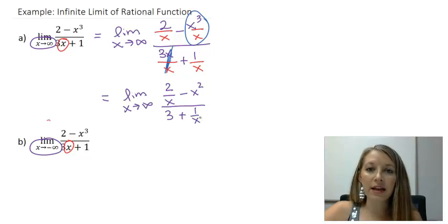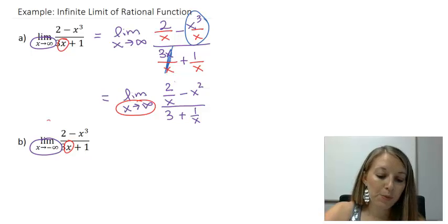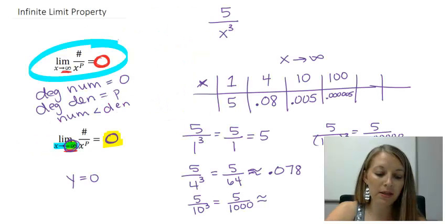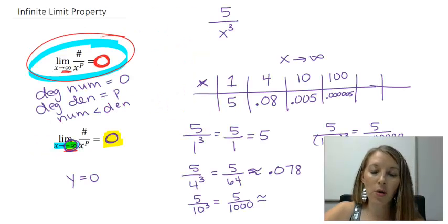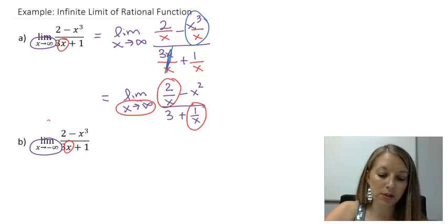I have everything exactly where I want it. All I need to do now is actually substitute in infinity. This piece here, 2 over x and 1 over x, that fits with our infinite limit property that says a constant over x to some power is going to go to 0. So those two pieces that I have circled there is going to go to 0.